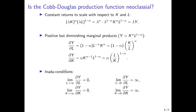This relates to the last of the three conditions. As L goes to infinity, the marginal product goes to zero — which we see directly. And as L tends to zero, the denominator decreases toward zero and the term goes to infinity. The same holds for capital: as K goes to infinity the marginal product goes to zero, and as K goes to zero it goes to infinity. Altogether, all three conditions for a neoclassical production function are fulfilled — the Cobb-Douglas production function is a neoclassical production function.